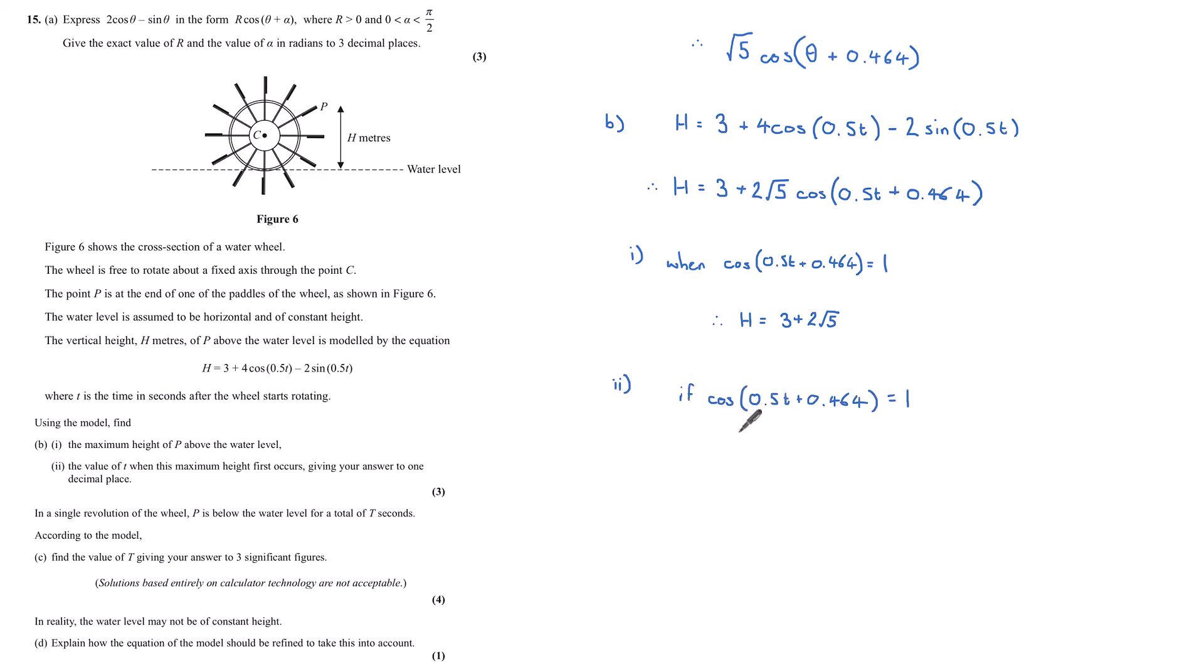Part (ii), I want to find the value of t when this maximum height occurs. This maximum height is occurring when cos(0.5t + 0.464) equals 1. If I think of a cos curve, cos first takes the value of 1 at 0, but then it next takes the value of 1 at 2π. So 0.5t + 0.464 equals 2π. Subtracting 0.464 from 2π gives me 0.5t equals 5.8 and so on, and so multiplying by 2 gives me t equals 11.63, which rounds to one decimal place as 11.6.